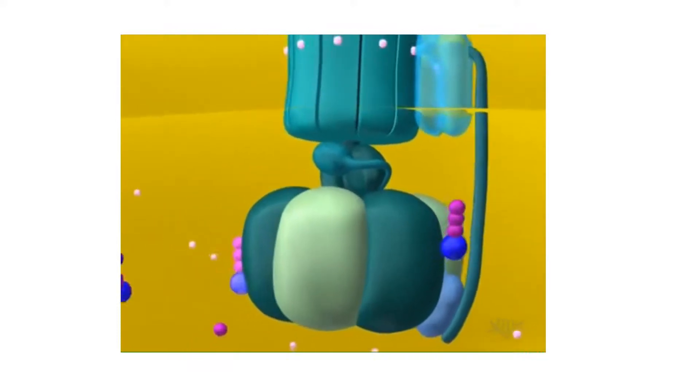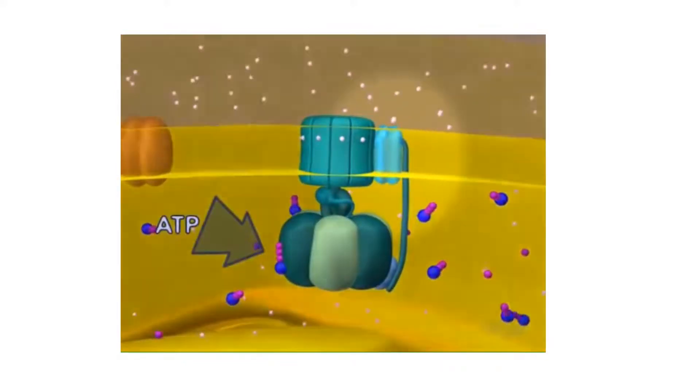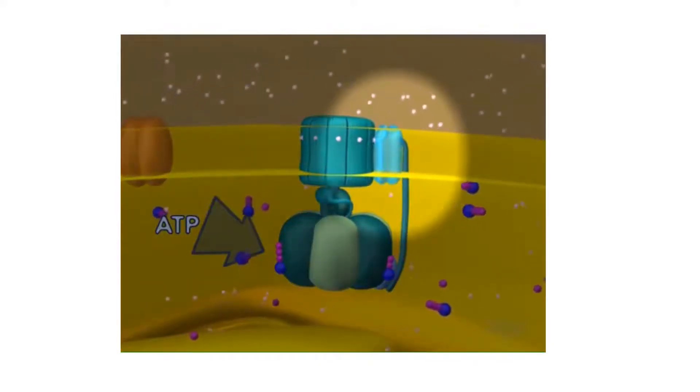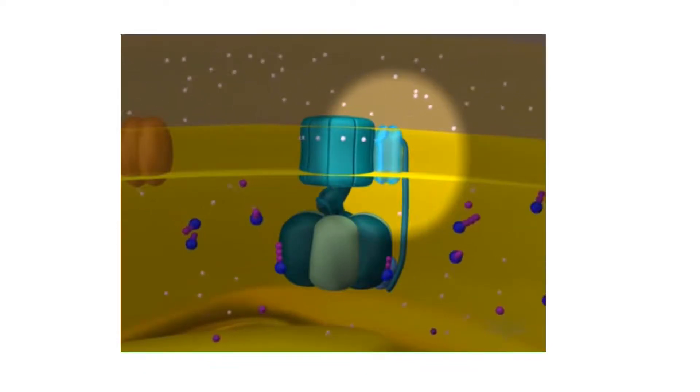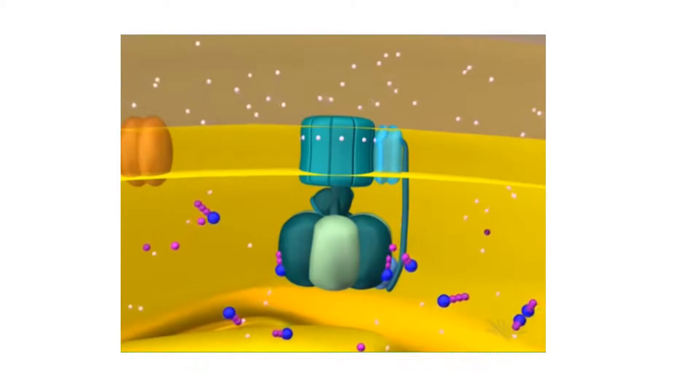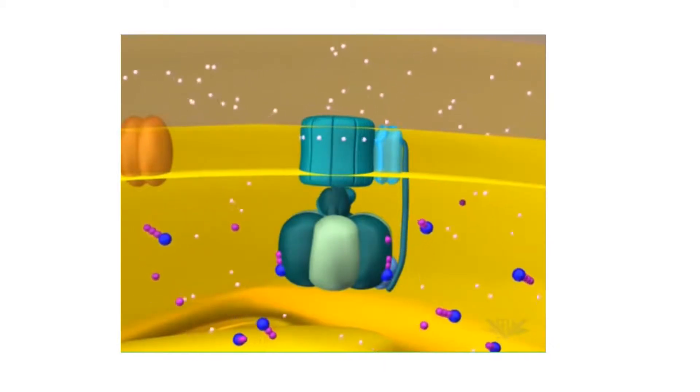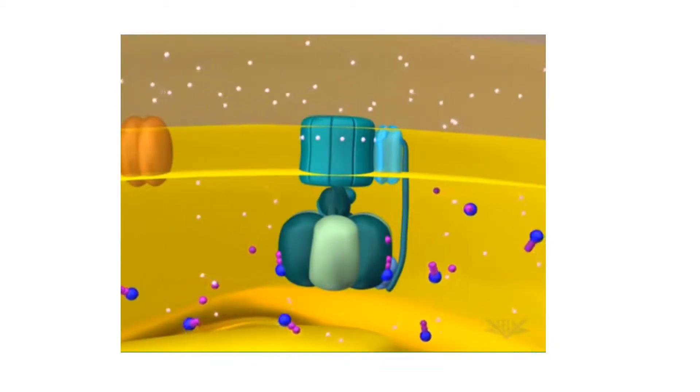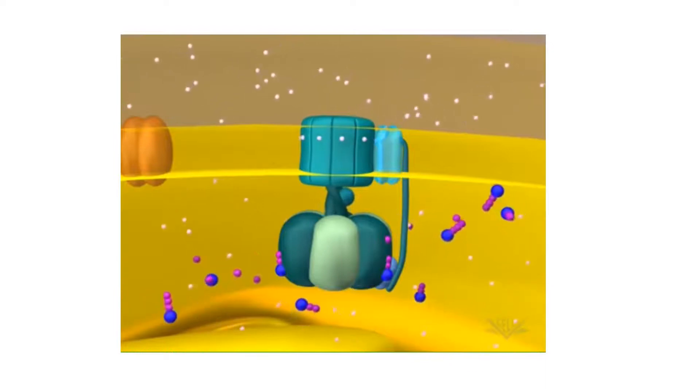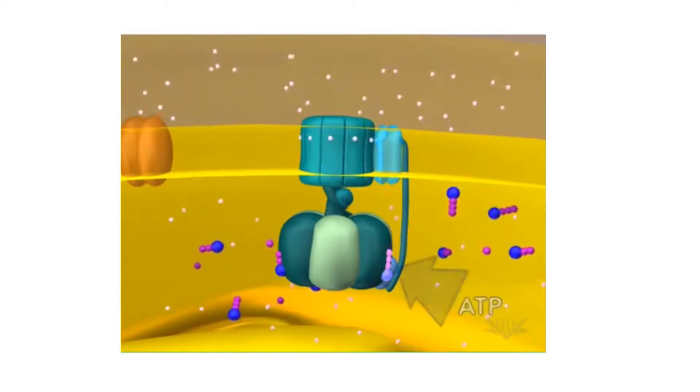Now let's watch the process again. Notice how the proton enters the ATP synthase and exits into the matrix space. Once three more hydrogen ions have crossed the membrane, another molecule of ATP will be made. In this example, the hydrogen ion gradient is large enough to produce six ATP molecules. Please watch as the remaining ATP molecules are synthesized.